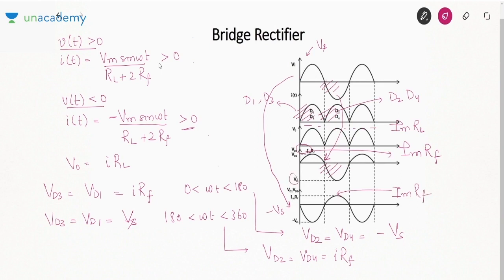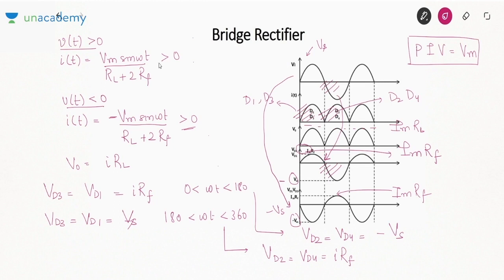From the diode voltage waveform, the maximum negative voltage is −Vm, so the peak inverse voltage (PIV) is Vm. In the center-tapped full wave rectifier the PIV was 2Vm, but here the PIV is only Vm. Since we must choose a diode whose breakdown voltage exceeds the PIV, here we only need breakdown voltage greater than Vm versus greater than 2Vm for the center-tap design, so the cost of diodes is reduced.